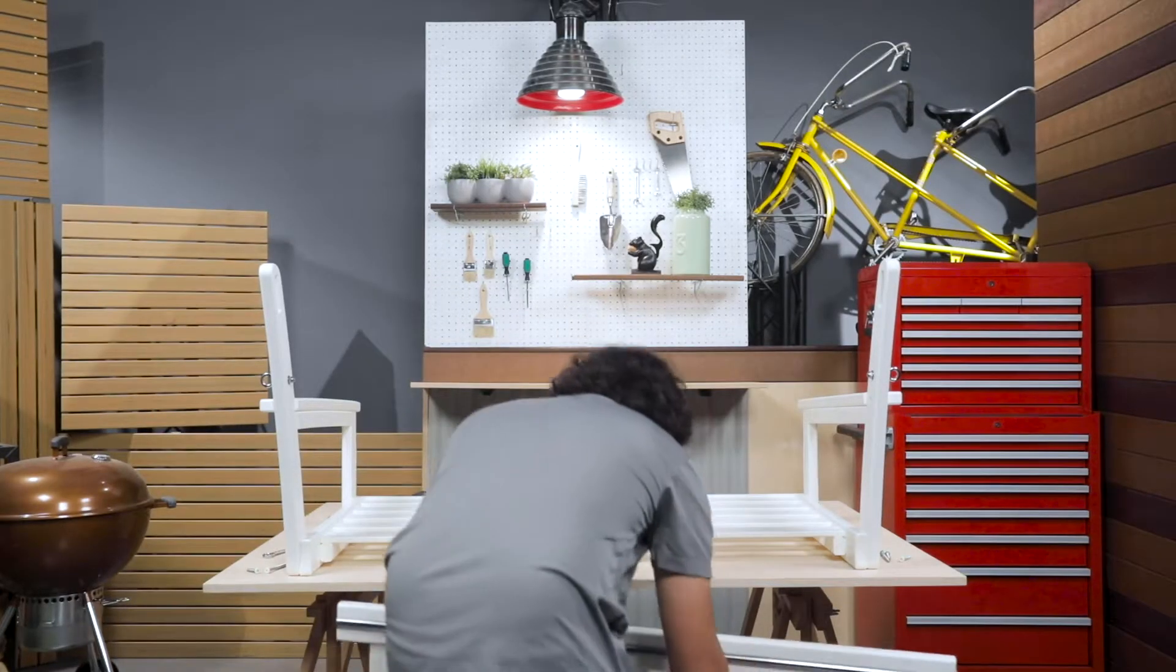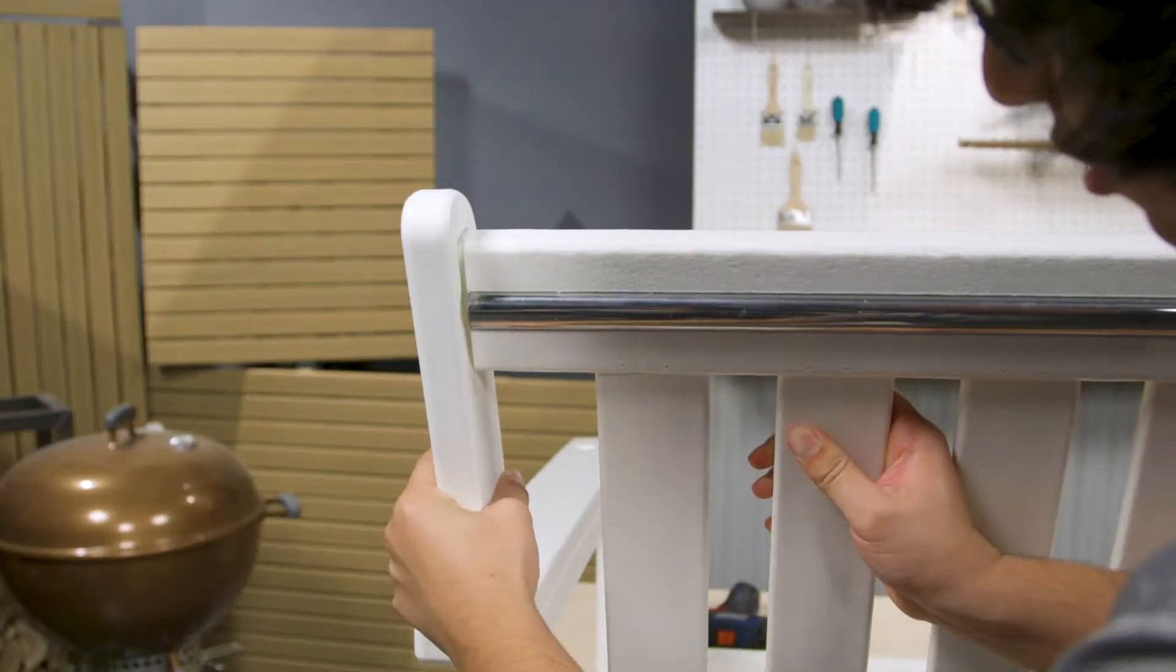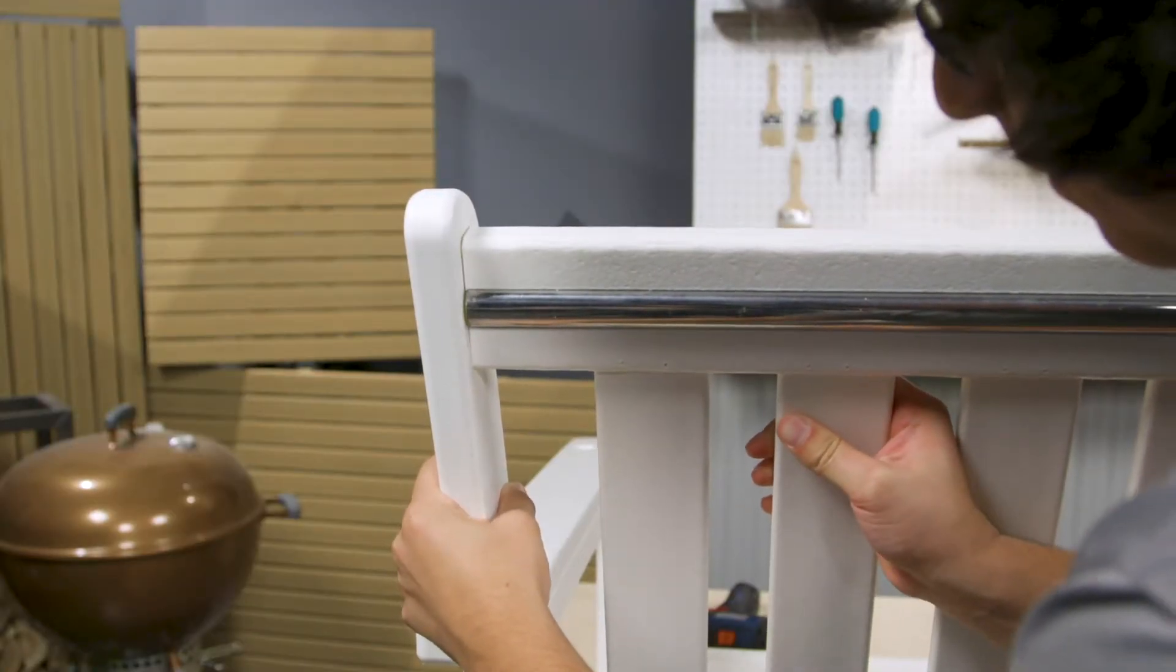Next, attach the back to the seat and side frames using two 1.5-inch bolts, two 3-inch screws, and one 2-inch screw.